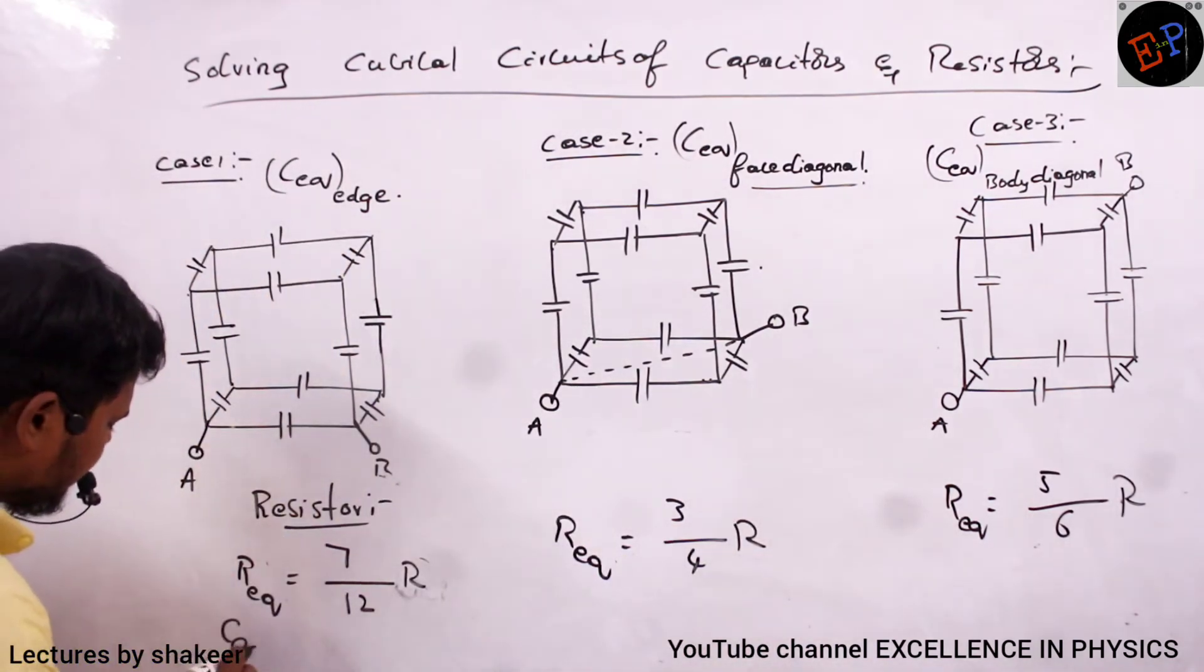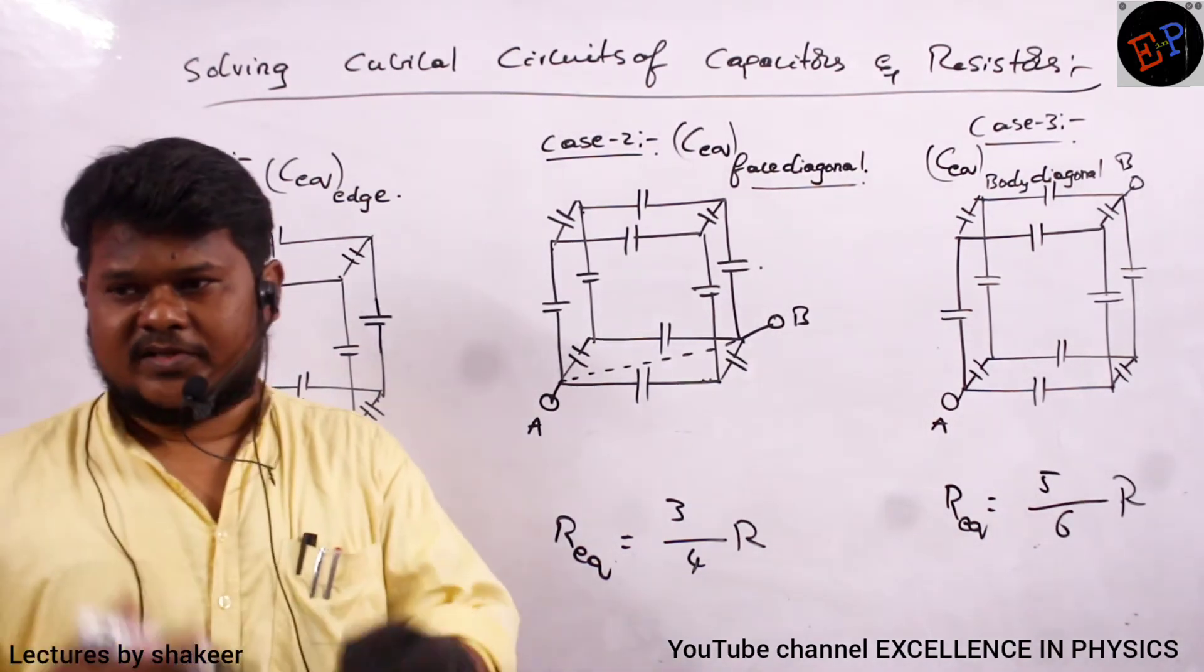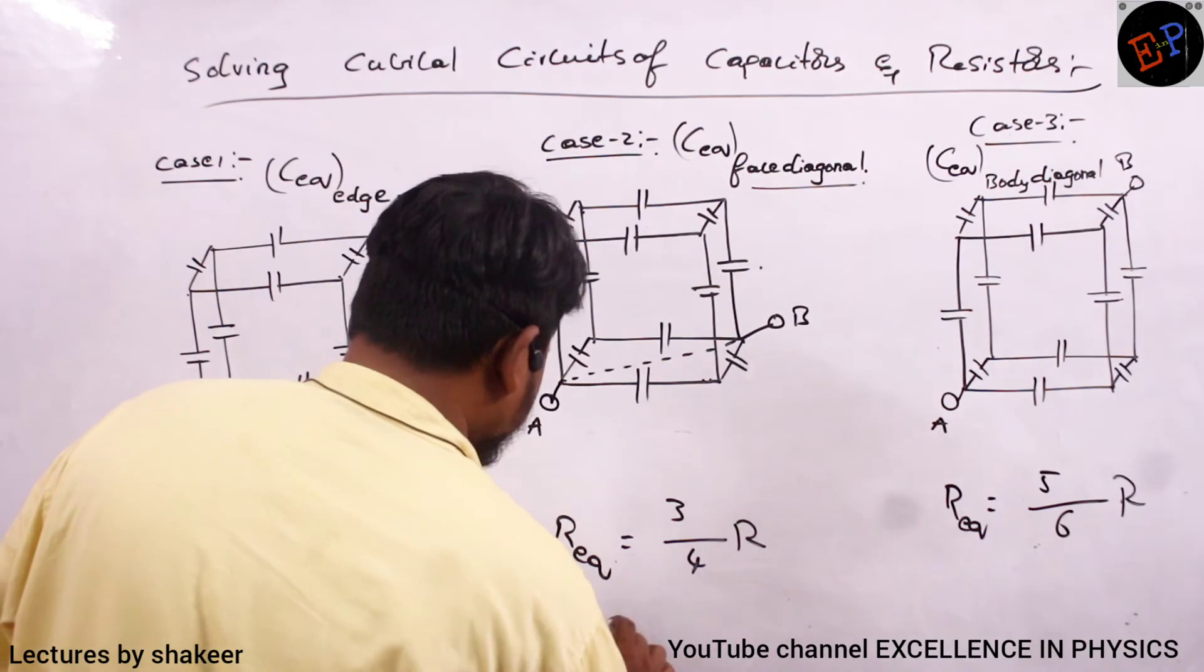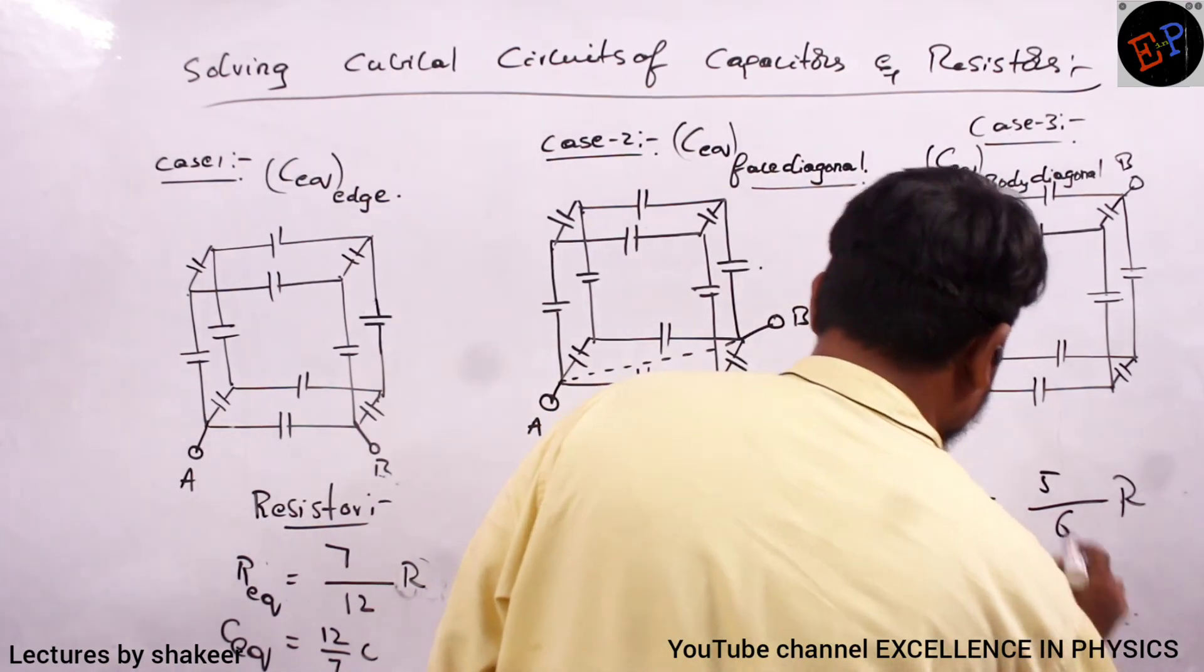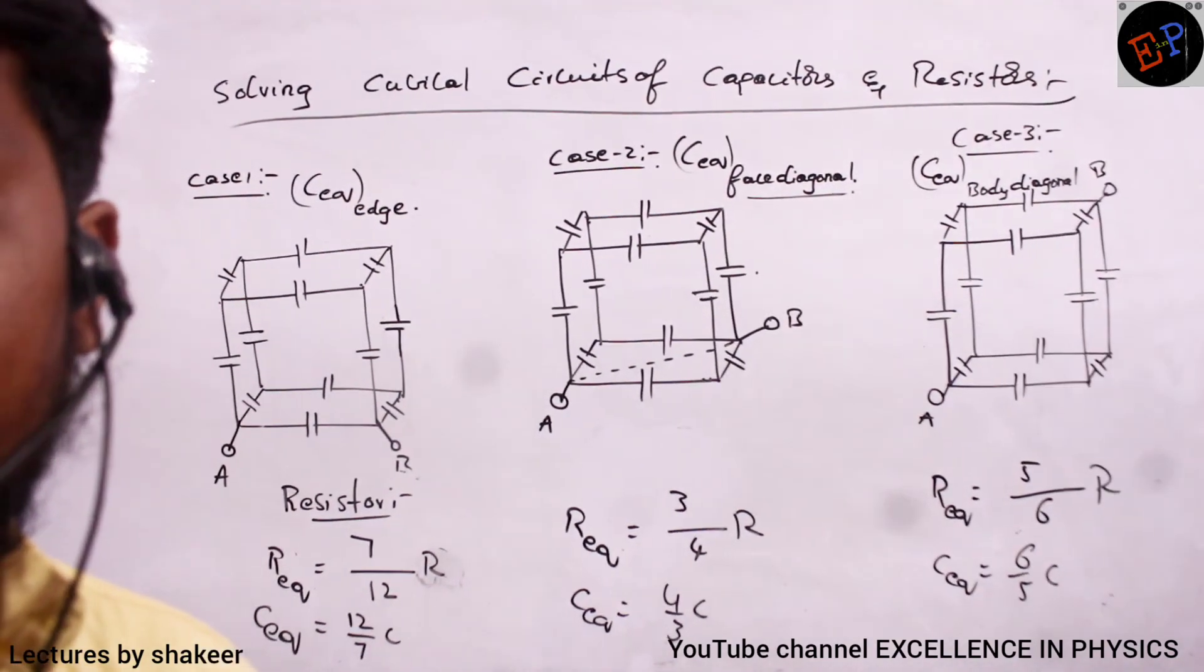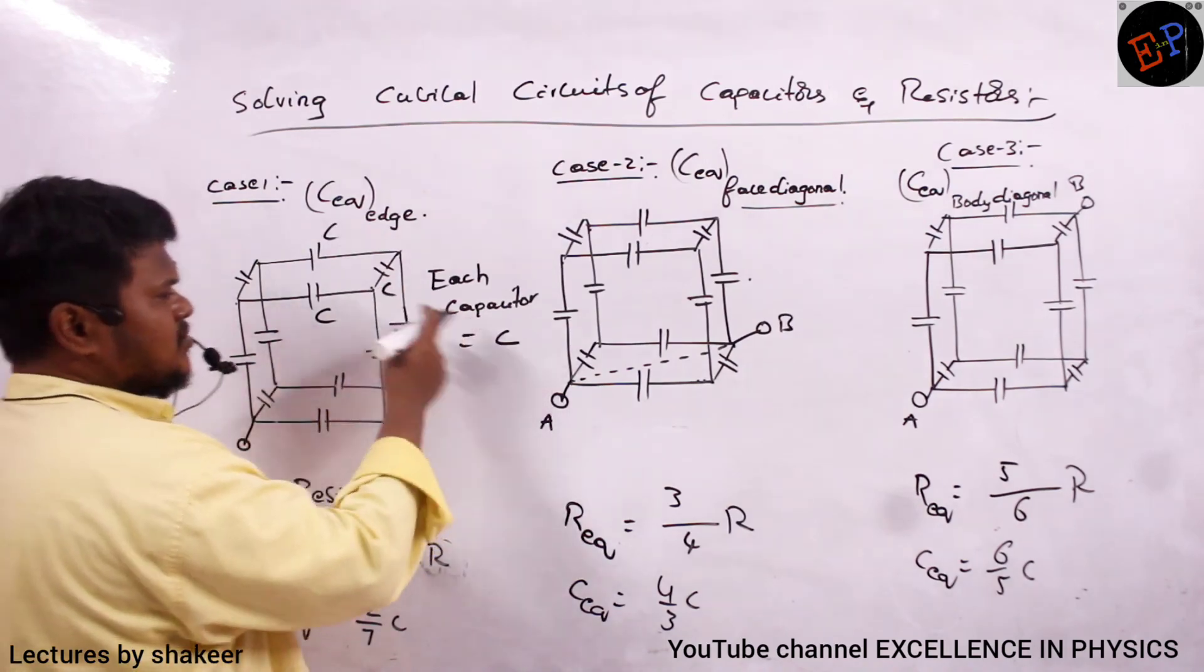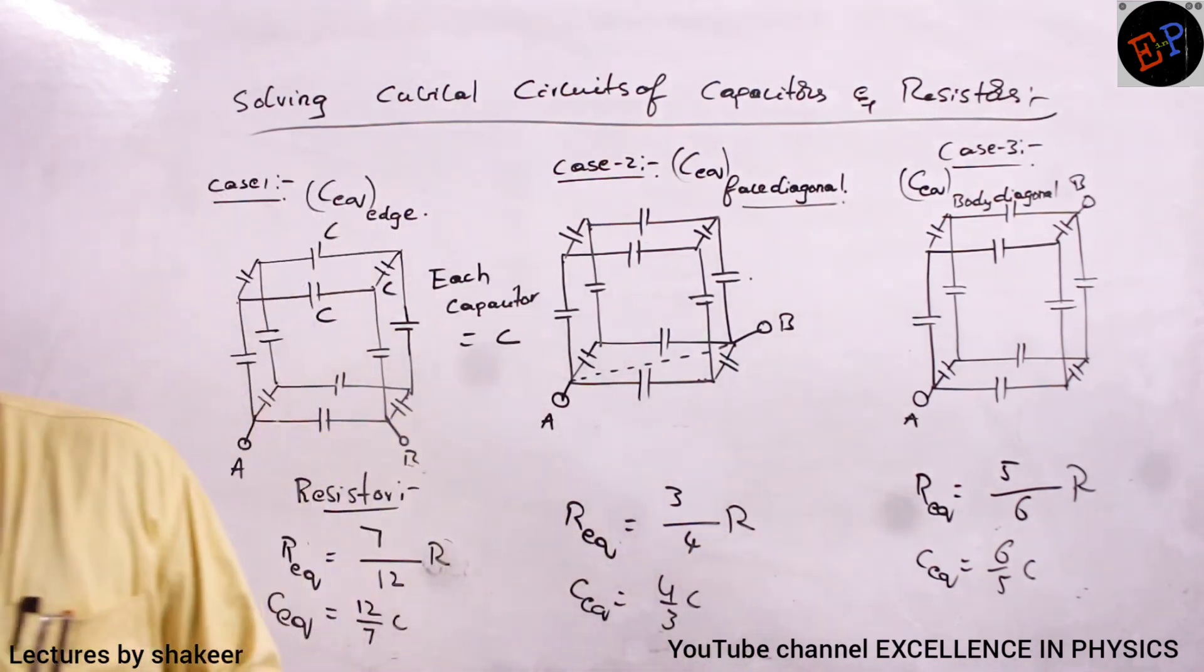Similarly, C equivalent. How can I calculate C equivalent? If capacitors are connected, just you take the reciprocal of them. Just you reverse them. It means I can write 12 by 7 C. Here I can write C equivalent is equals to 4 by 3 C. And here I can write C equivalent is equals to 6 by 5 C. That's all. So, this will become my answers for capacitors. So, here every capacitor is C. Similarly, every resistor is R. Then you can use this respective formula.